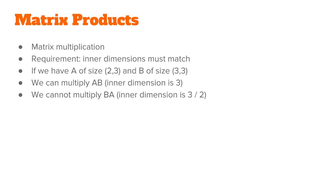So if I have a matrix A of size 2 by 3 and another matrix B of size 3 by 3, then I am allowed to multiply AB since the inner dimension is 3. I cannot, however, multiply BA since the inner dimension on the left is 3 and the inner dimension on the right is 2.